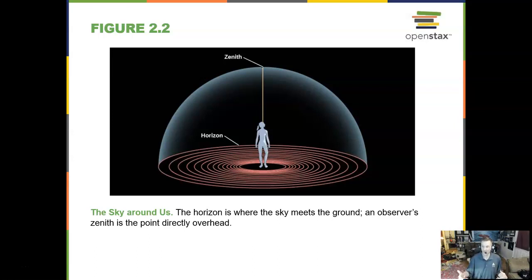And we have some points on the celestial sphere that we like to describe. The zenith is the point directly above your head. No matter where you are, the zenith is that point directly above your head. If you go 90 degrees out flat, you can make your horizon.